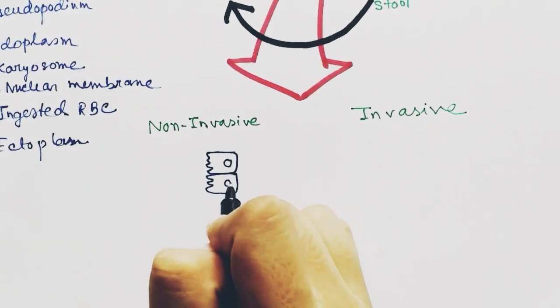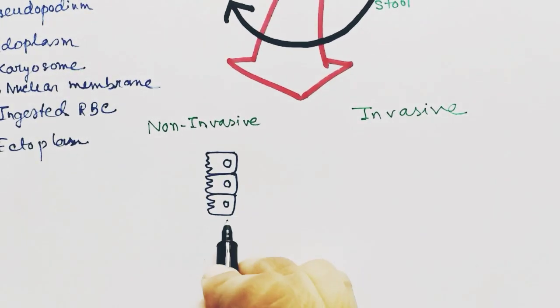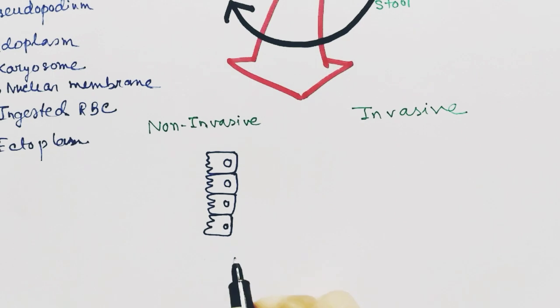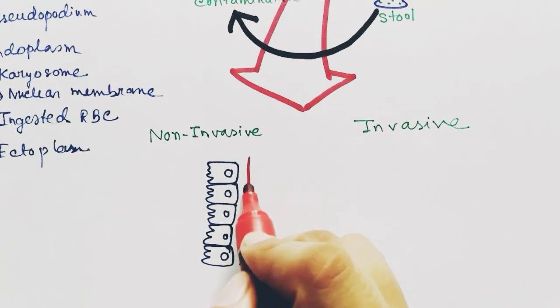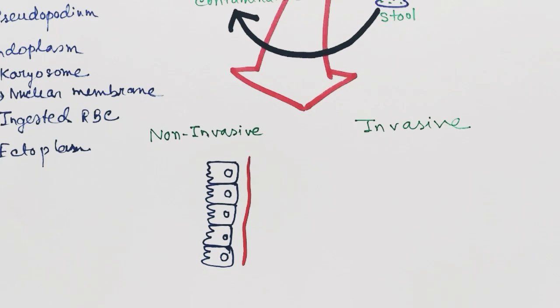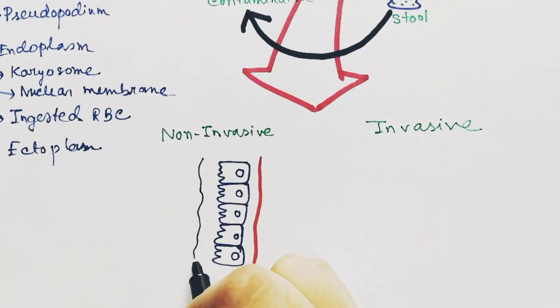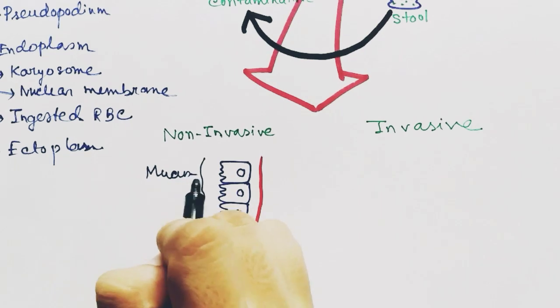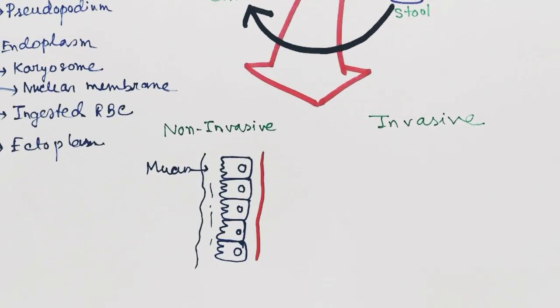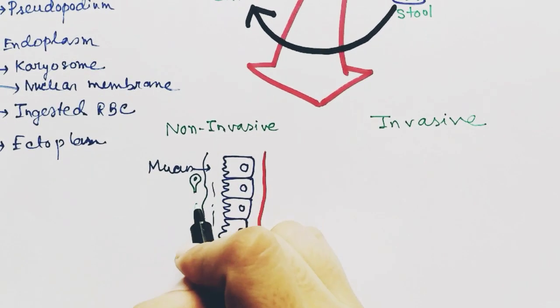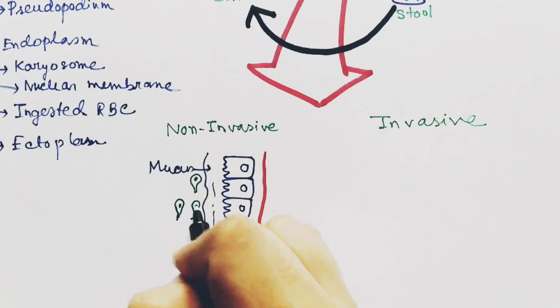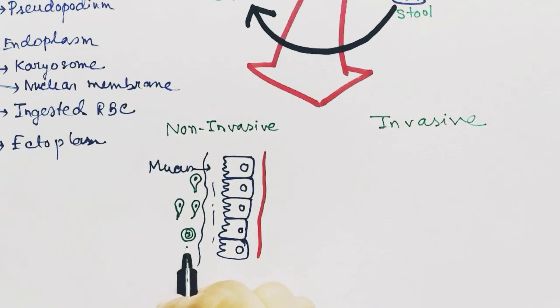This is the colon lining—these are the epithelial cells of the colon. Behind this, the bloodstream is present, and above the lining there is a layer of mucus. In case of non-invasive infection, the trophozoites glide over the mucus and form cysts.